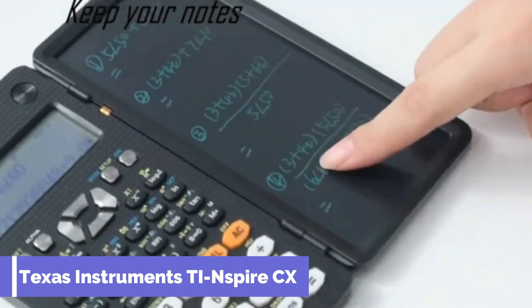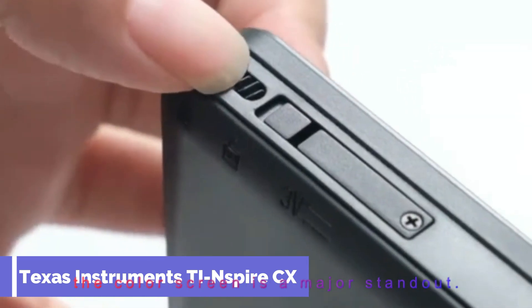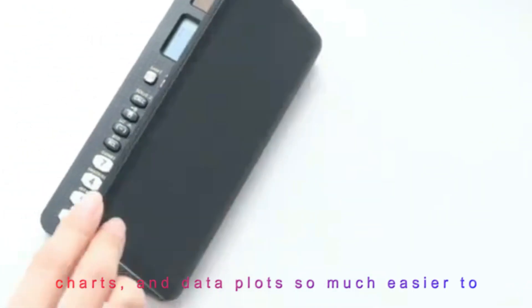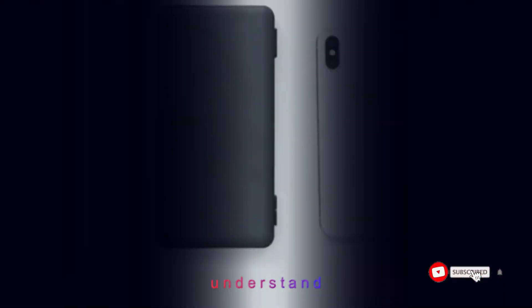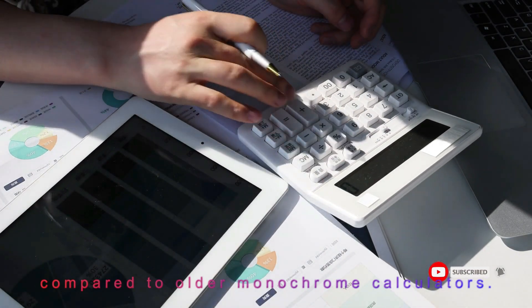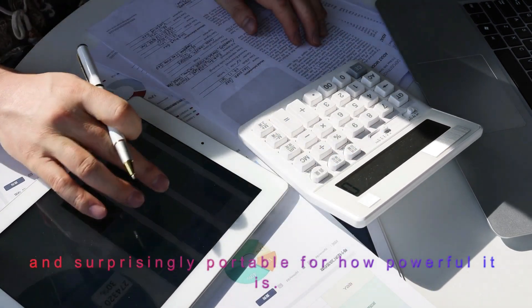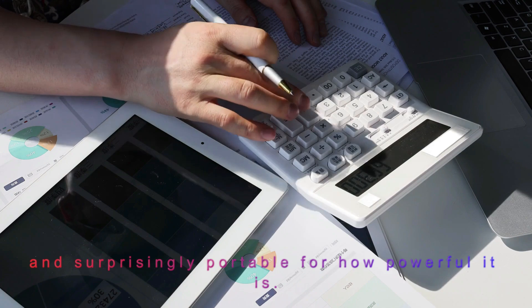Right out of the box, the color screen is a major standout. It's crisp, bright, and makes graphs, charts, and data plots so much easier to understand compared to older monochrome calculators. The thin, lightweight build is sleek, and surprisingly portable for how powerful it is.